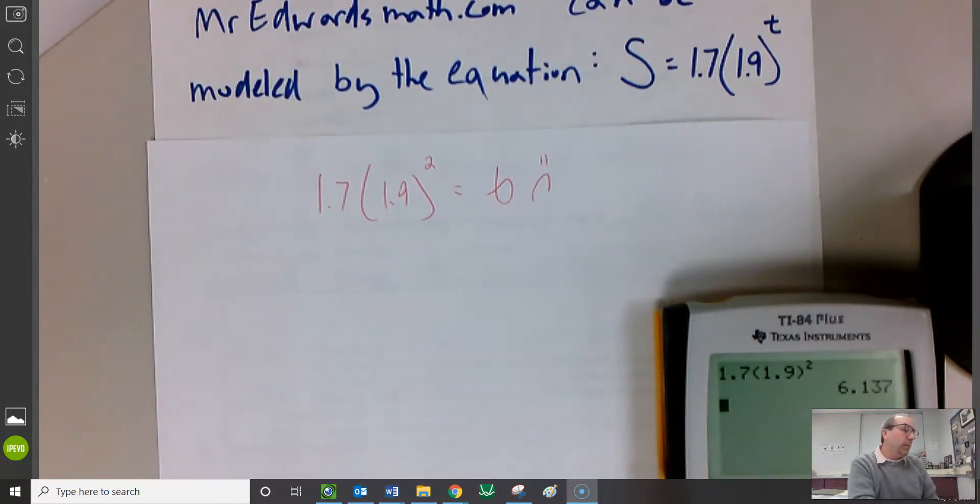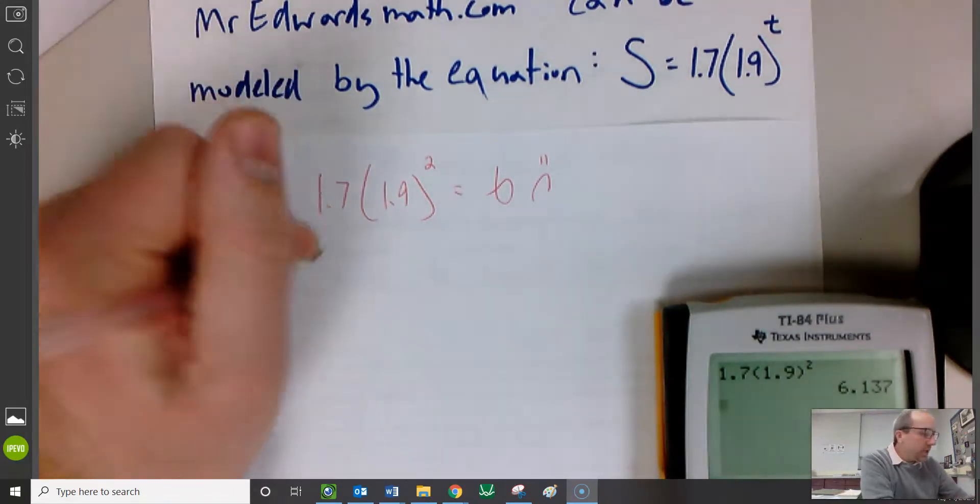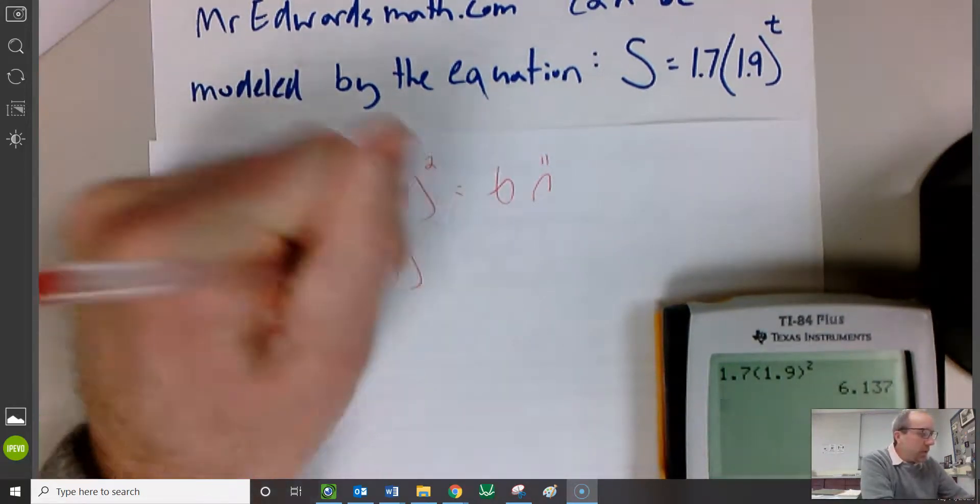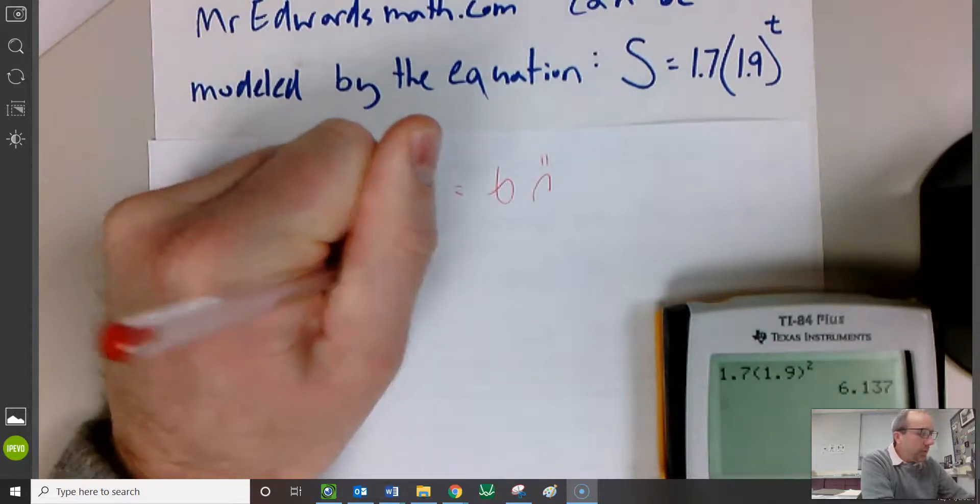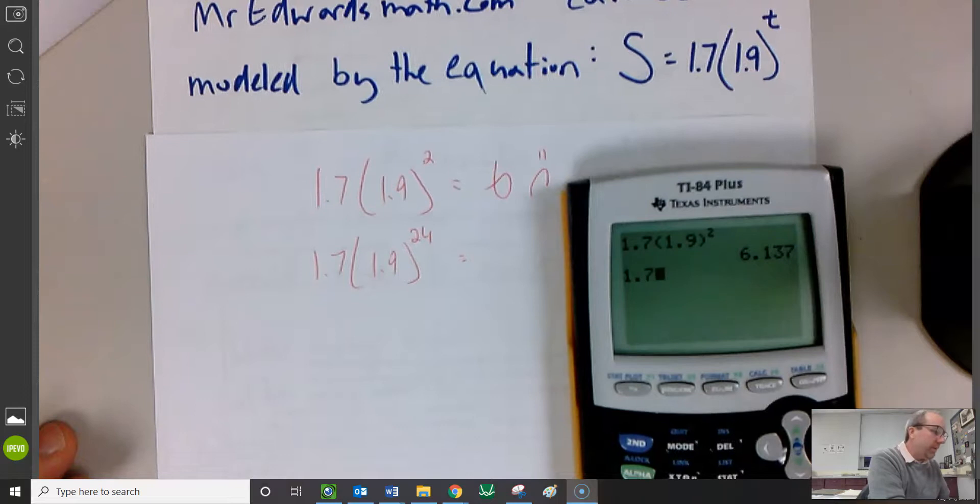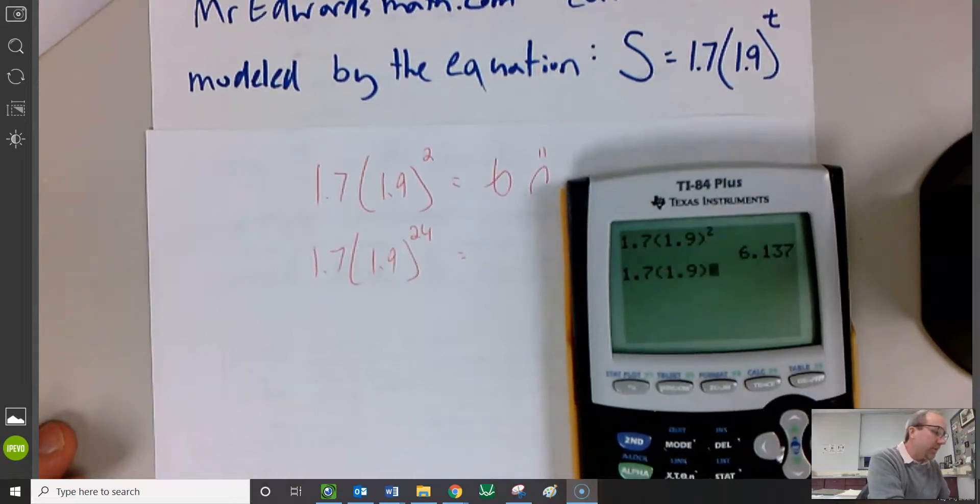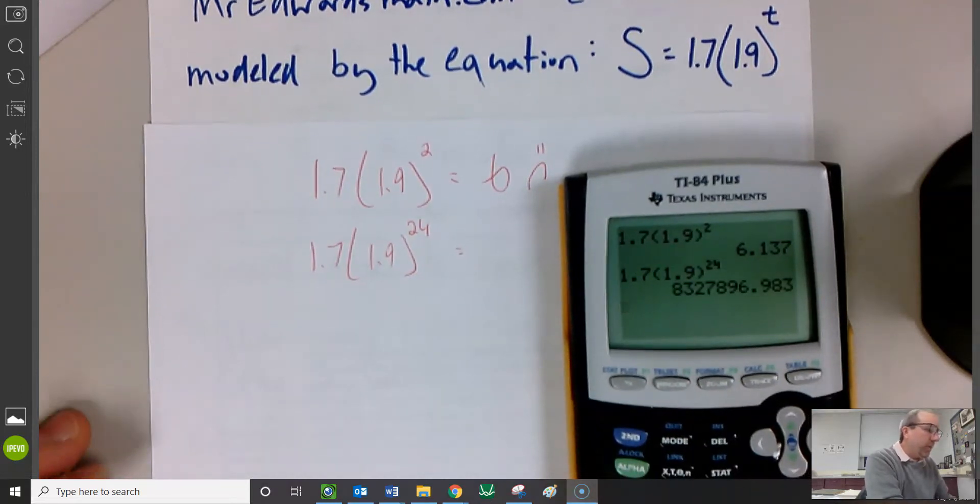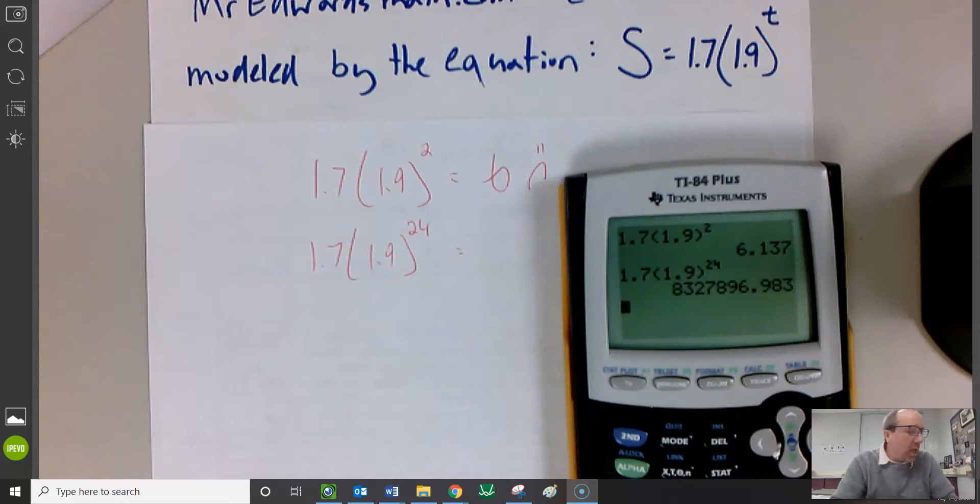What about two years? The only thing that changes now is, instead of two months, two years, that would be 24 months. So I'm going to do the same equation, 1.7 to the 24th power. That's a lot. 8,327,897 subscribers. It's taken off. That's how exponential growth works. It may start off slow, but eventually, the thing is going to take off.